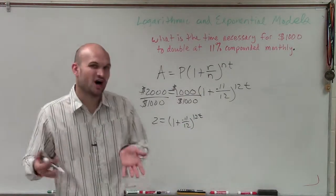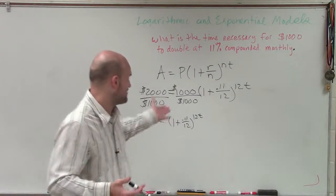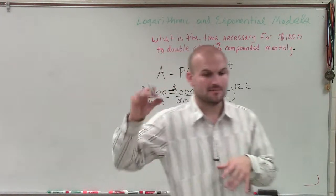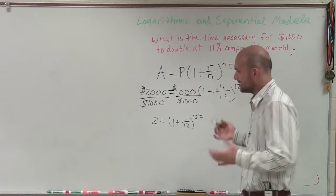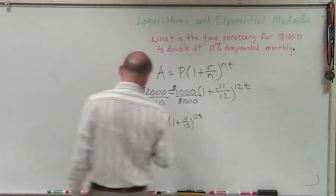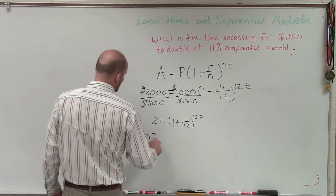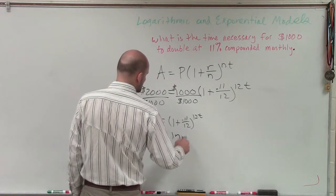Now remember, I need to get my variable off of the power of being a power. So to do that, a couple of rules we can apply is if I take the ln of both sides. And so it's going to look something like this.